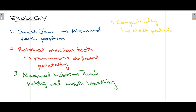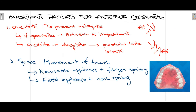Similarly, mouth breathing can also lead to crossbite. Lastly, there are congenital causes — for example, cleft palate. In cleft palate, the space in the cleft causes teeth to erupt in a maloccluded pattern, which can also lead to crossbite.